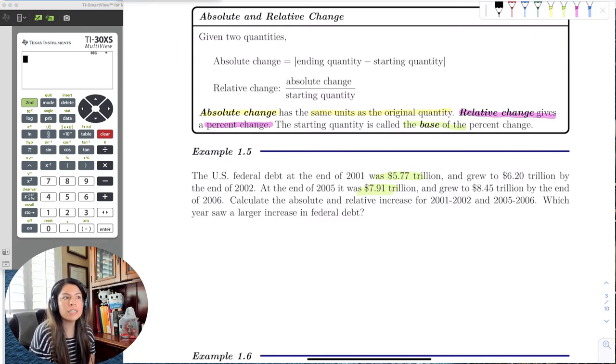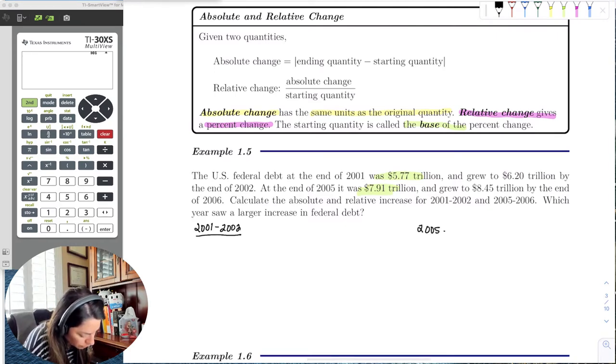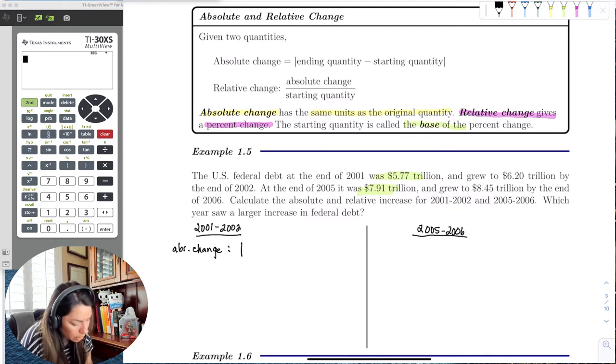So there's going to be two cases here, one for 2001, 2002. So let's go ahead and find the absolute change here. So the absolute change here would just be the ending quantity minus the starting quantity in absolute values, hence the word absolute, right? So ending quantity was 6.2 trillion minus 5.77 trillion.